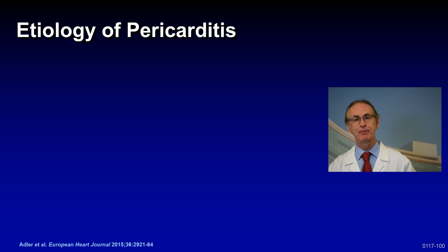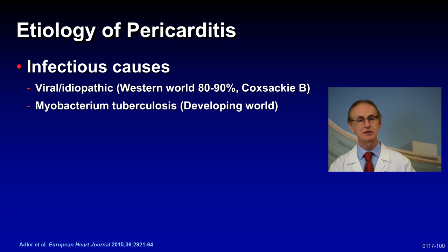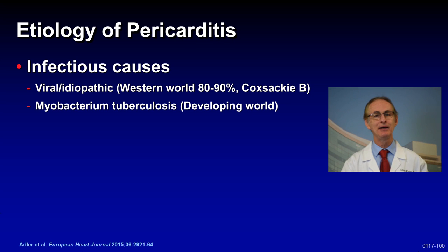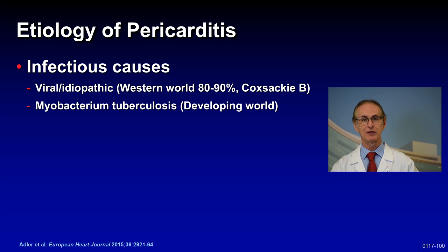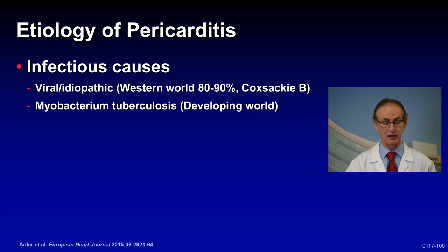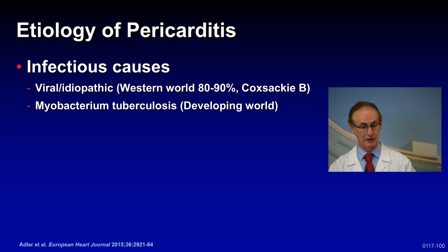In terms of etiology of pericarditis, there are basically infectious causes, which make up the majority of cases. Usually it's viral or idiopathic — somebody gets a Coxsackie B infection or influenza. This accounts for 80 to 90 percent of cases in the Western world. In the developing world, TB is the most common cause — if you were in India, TB would be the most common cause of pericarditis.